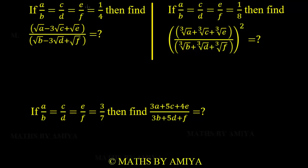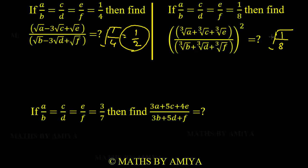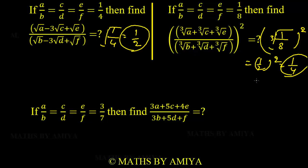Ratios are given equal to 1/4. The change is +, +, -3, -3, +, + — same change. All terms have root power — same power. So the answer is the square root of 1/4, which is 1/2. For the next question, ratios equal to 1/8, all terms have cube root, same change. Cube root of 1/8 = 1/2, and squared gives 1/4.